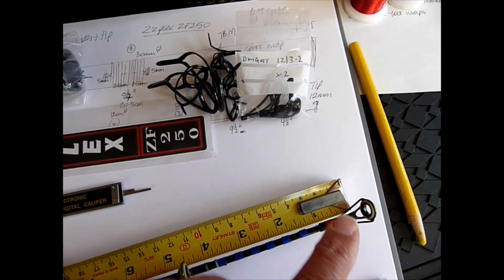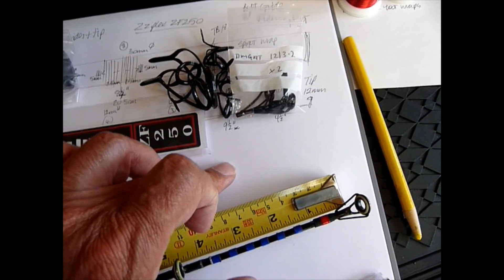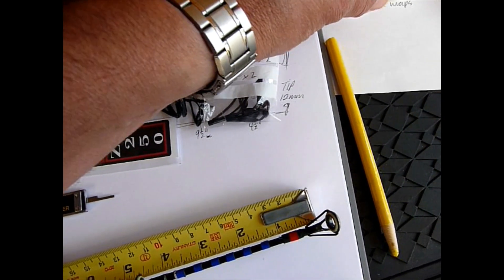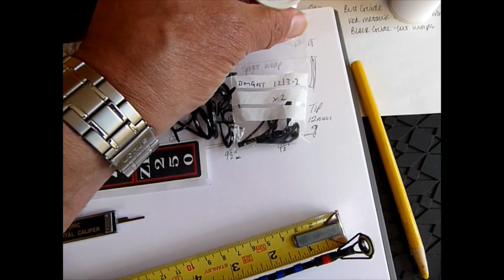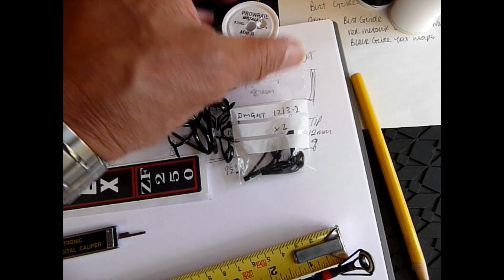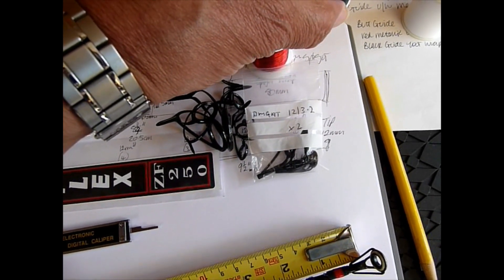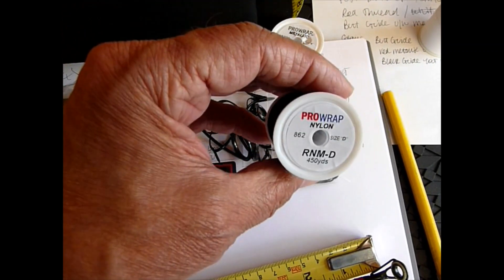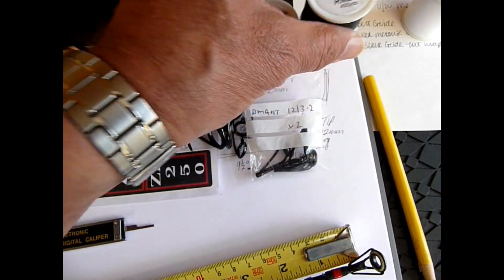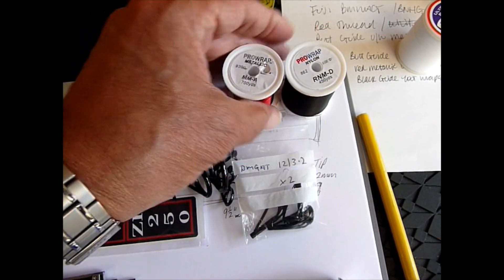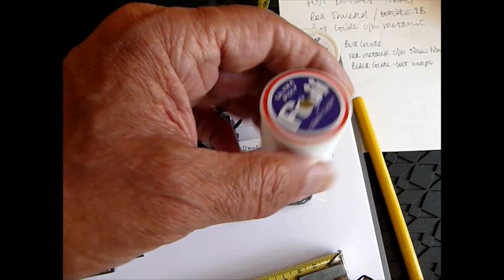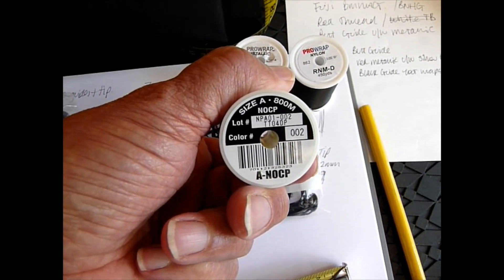When you're ordering your components, you might have to take the tip off the rod to get the correct size. Now thread - the customer wants a metallic under wrap for the butt guide, which is the red metallic thread, grade A, the pro wrap version. Then we'll have the black guide foot wraps. It's the midnight, they call it RNA 862, size D thread.